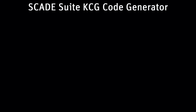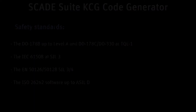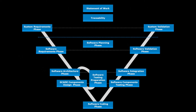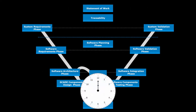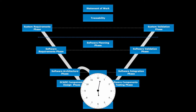C or Ada code can be generated from the SCADE models thanks to the SCADE Suite KCG code generator. KCG has been qualified as a development tool for the mandatory standards for safety-critical software applications. This code generator saves verification effort in the coding phase, such as code reviews, code to low-level requirements traceability, and low-level testing on the generated code. Corresponding verification activities are suppressed and verification objectives are automatically fulfilled.